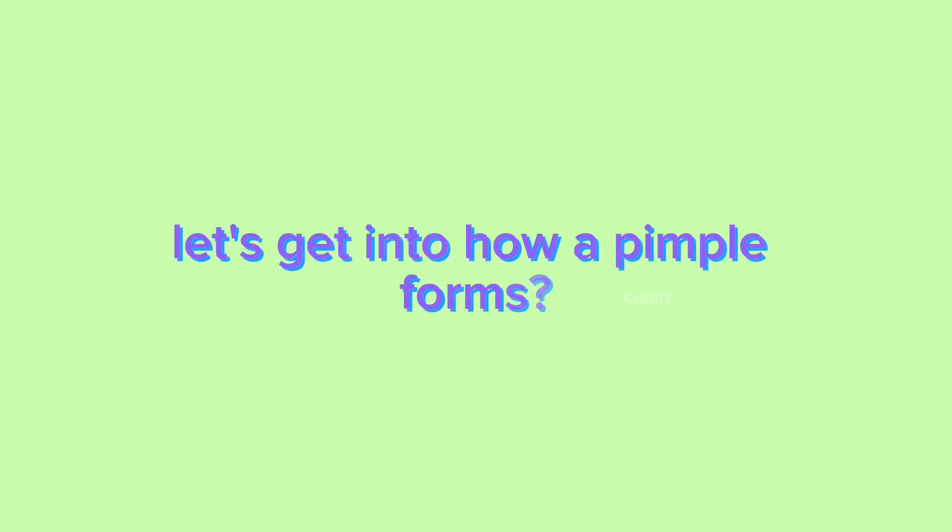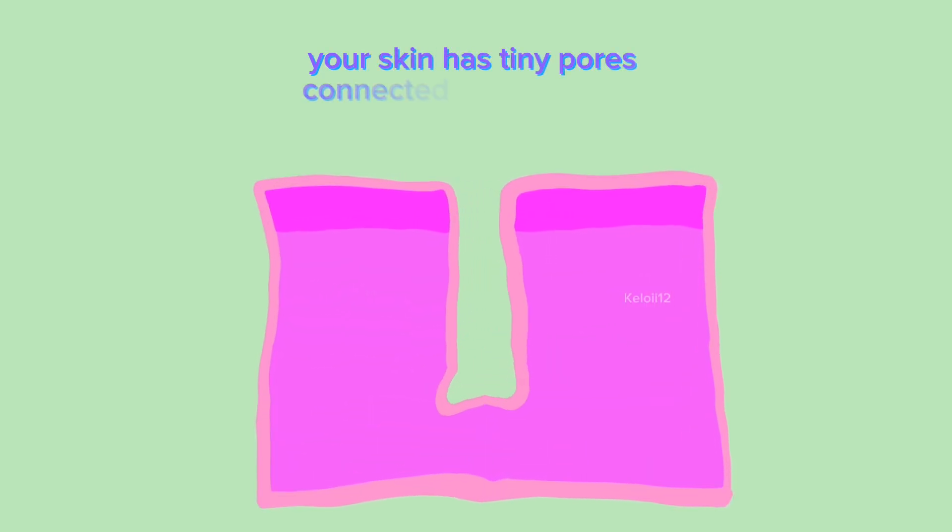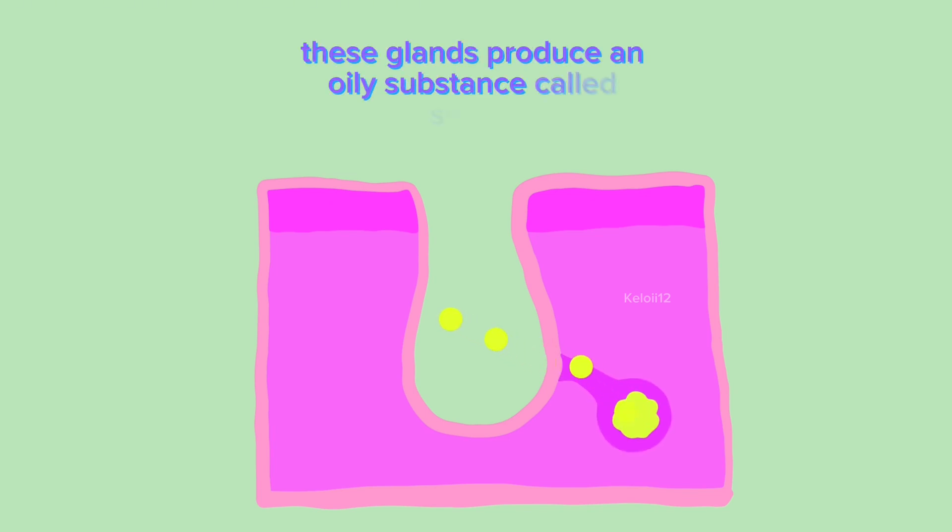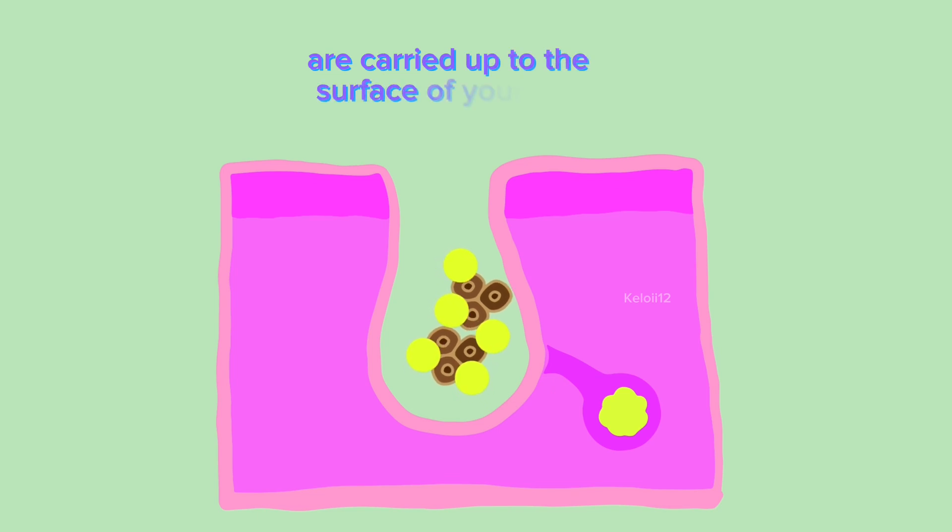Let's get into how a pimple forms. Your skin has tiny pores connected to sebaceous glands. These glands produce an oily substance called sebum. Along with sebum, dead skin cells are carried up to the surface of your skin.